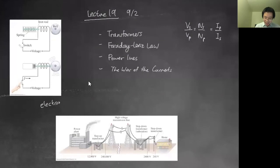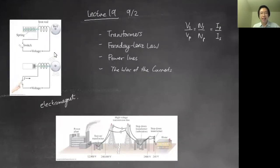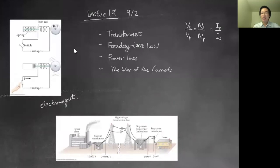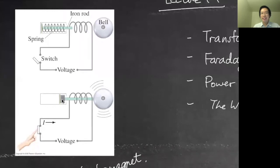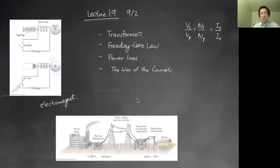Hopefully you see that the idea of electromagnets is a really big deal in real life. I've given you a couple of applications including the Northern Lights, velocity and mass spectrometers, and even picking up metallic trash for recycling. This is just another example from the textbook about doorbells. You have a spring-loaded rod here — as soon as you close the switch, it generates a magnet which sucks the iron rod in and rings the bell. So many applications.